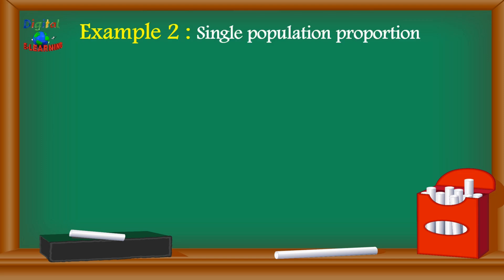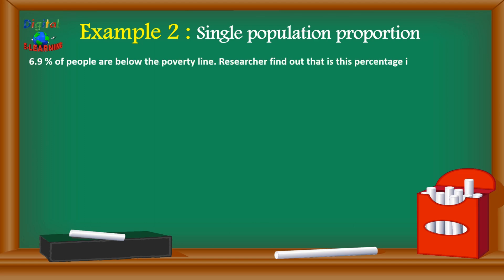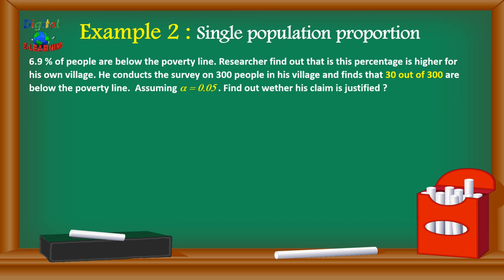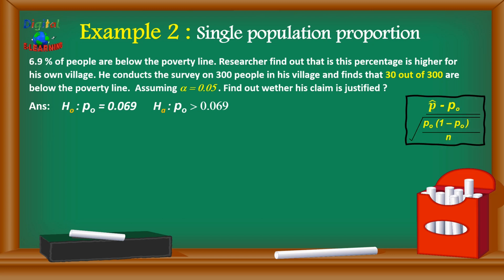Let's take another example of single population proportion. It is known that 6.9 percent of people are below the poverty line. A researcher finds that this percentage is higher for his own village. He conducts a survey on 300 people and finds that 30 out of 300 are below the poverty line. Assuming alpha of 0.05, we need to find out whether his claim is justified. The null hypothesis is p-naught equals 0.069, and the alternate hypothesis is p-naught is greater than 0.069, since his claim is that the percentage is higher in his village.